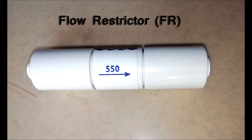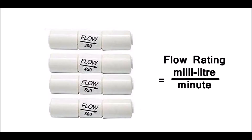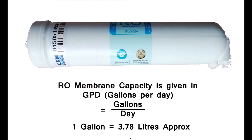Flow restrictors are available in various flow ratings and should be selected according to the capacity of the RO membrane. Let's see how we can find the matching flow restrictor for the RO membrane. The rating you see on the flow restrictor — such as FR300, FR450, FR550, FR800 — indicates the flow rating in milliliter per minute. The RO membrane capacity is given in GPD, gallons per day.